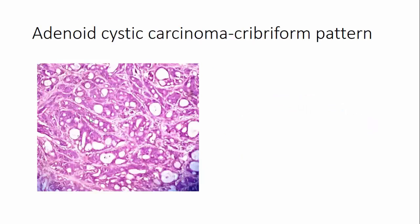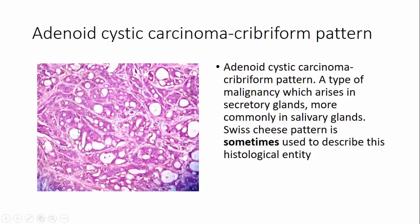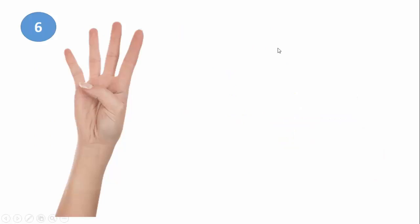A second, less common use is in adenoid cystic carcinoma — one of the most common malignant salivary gland tumors. The cribriform pattern shows variable cystic dilatation, and that's how it is sometimes referred to as a Swiss cheese pattern, though it is more often called the cribriform pattern.